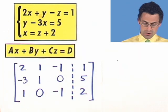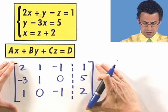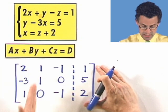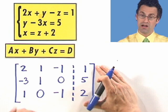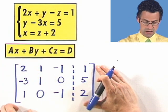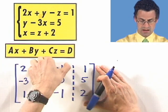Why would you want to do that? Well, it's a nice rectangular grid where you're focusing on just the important pieces of information. And we understand that this column means x, this column means y, this column means z, and this column means the constants.